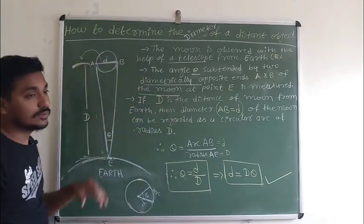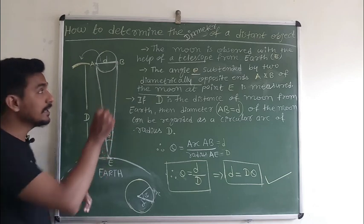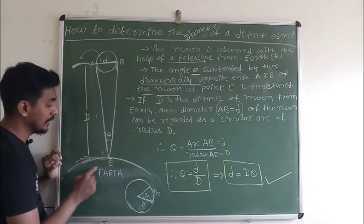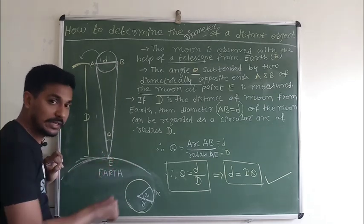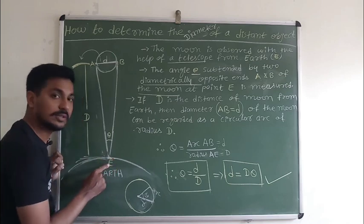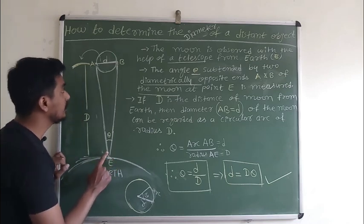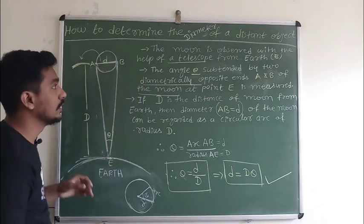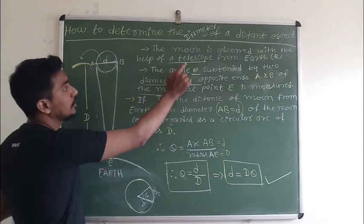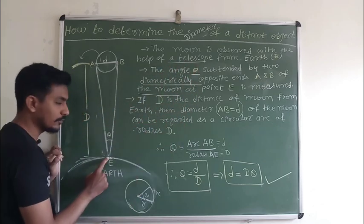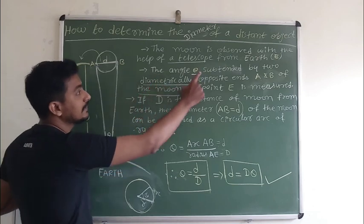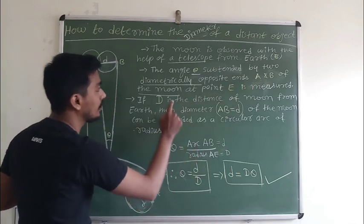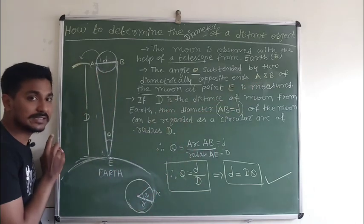Suppose we want to measure the diameter of the moon. This is our earth and from the earth, we fix our telescope at a particular point called E, and from this point we are observing the moon. We fix the telescope and then the angle theta subtended by diametrically opposite ends A and B of the moon at point E is measured.